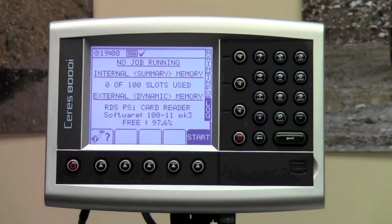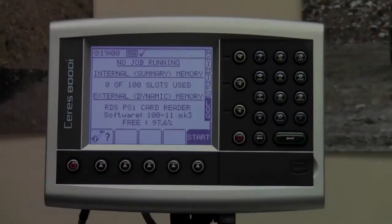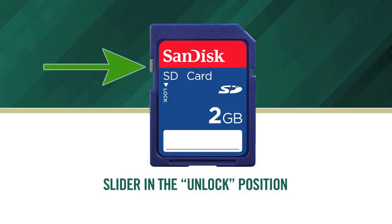The bottom portion of the display is where your SD memory card data is found. It shows you the percentage of memory left on your data card. If there is nothing in this bottom display area, the SD card is not detected. Once again, check to make sure the SD card is not an HC formatted card and make sure that the lock on the side of the card is in the correct position.